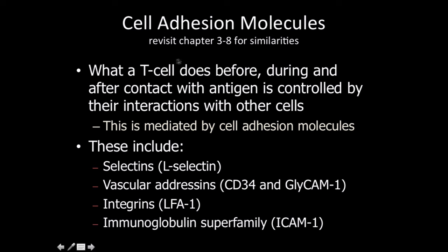Cell adhesion molecules — what a T-cell does during and after contact with an antigen — are controlled by their interactions with other cells. This is mediated by adhesins and integrins. These include the selectins, the vascular addressins, integrins, and the immunoglobulin superfamily. The only ones that are really new here, as opposed to what we talked about with neutrophils, would be the specific identities in each one of them, but they're ultimately part of the same family because they do the same job.